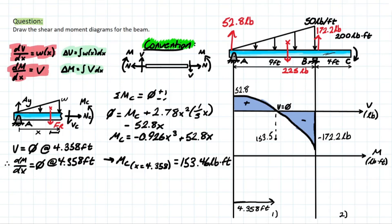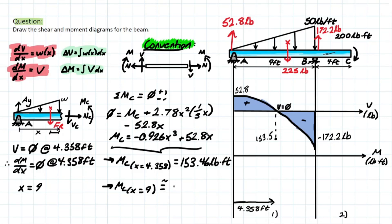The next critical point is at x = 9 feet — the endpoint where the distributed load ends and our function is no longer valid. Plugging x = 9 into our moment function gives a value of approximately negative 200 pound-feet.